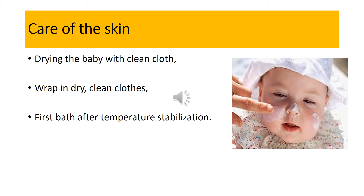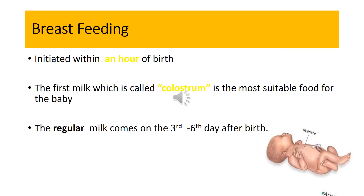Soon after birth, the baby, wet from amniotic fluid, is dried with a clean cloth to remove any meconium or blood clots. This is done by the nursing staff. The baby is then wrapped in dry, clean clothes to prevent heat loss. The first bath is given after temperature stabilization, usually after one day.